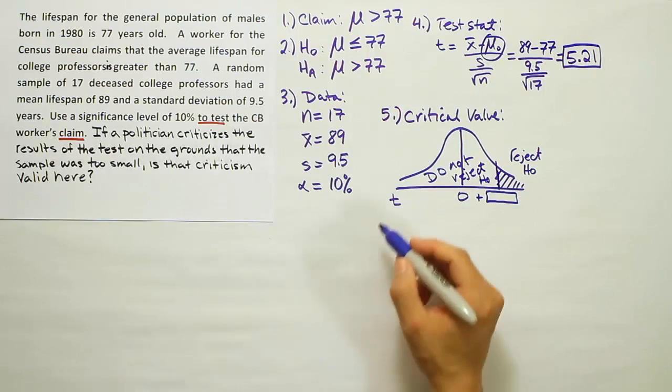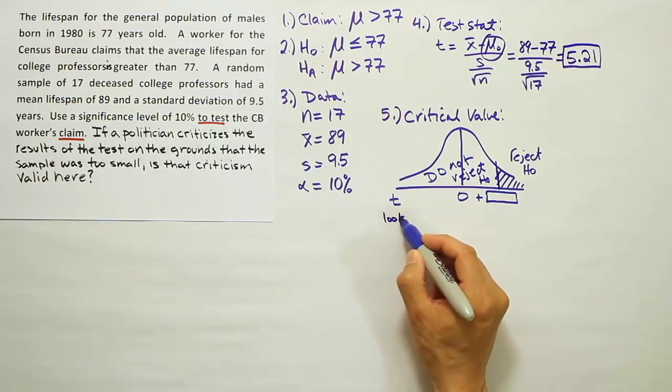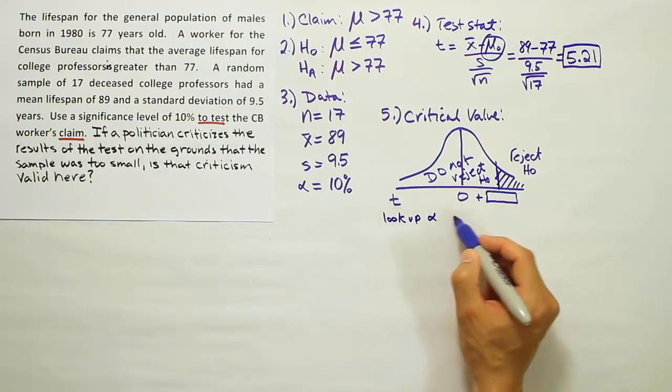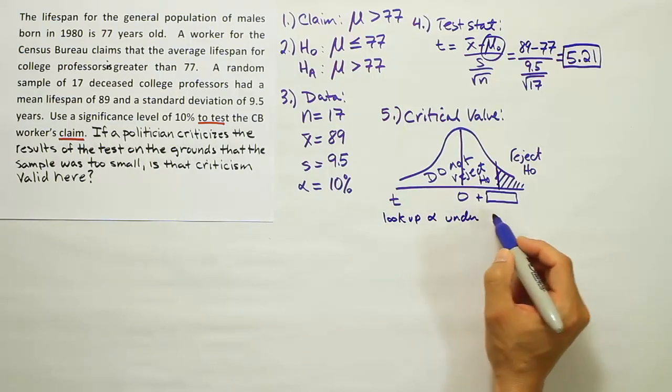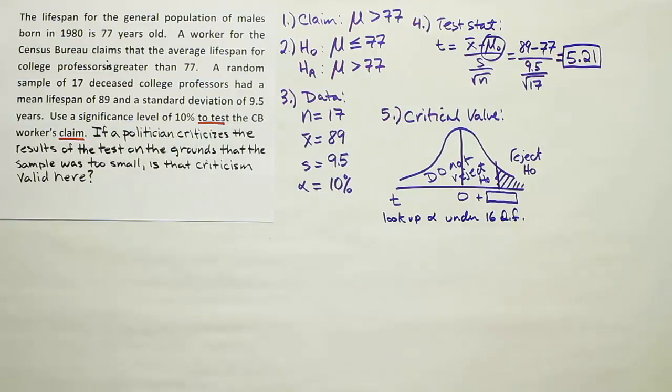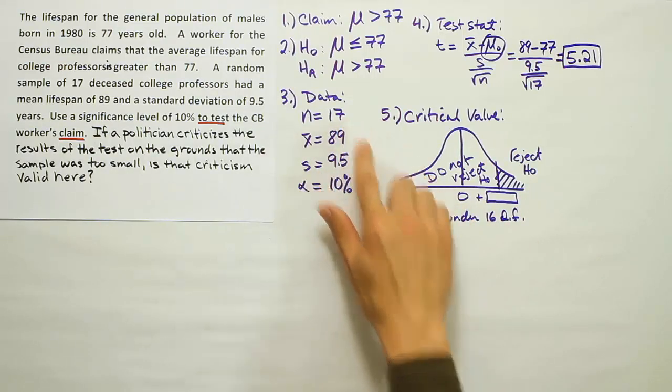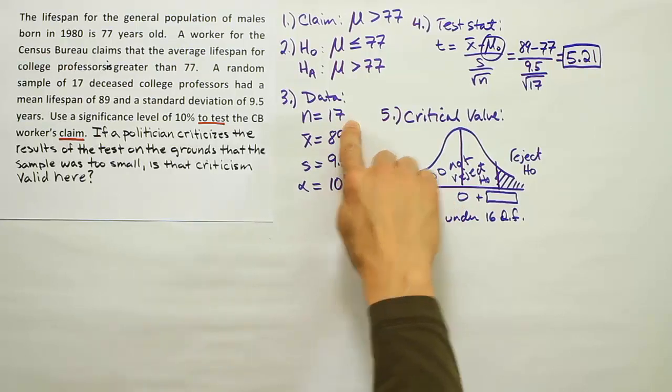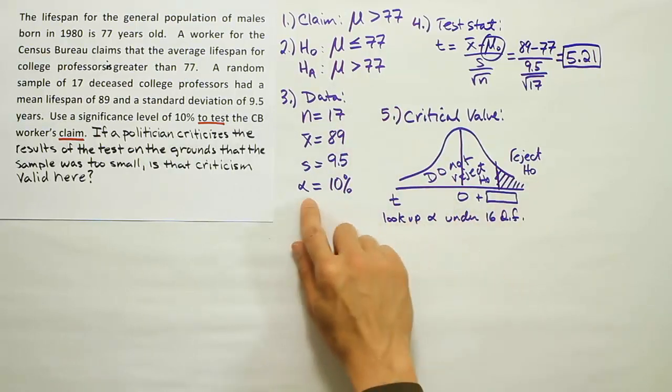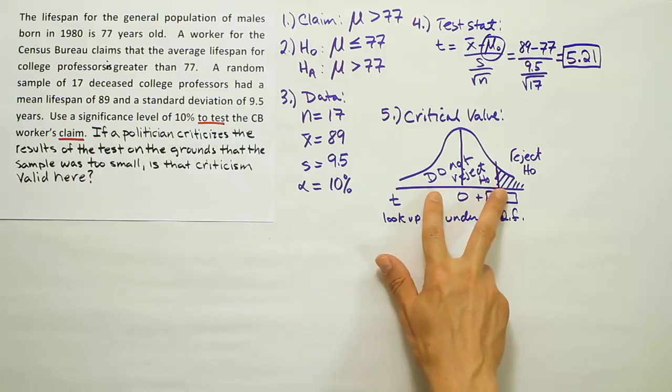In order to determine that, we're going to have to look up alpha under 16 degrees of freedom. Remember that if it's a one-tailed test, we look up alpha on the T-table. And the degrees of freedom is just n minus 1. So 16 degrees of freedom, because n is 17. If it had been two-tailed, we look up alpha divided by 2.